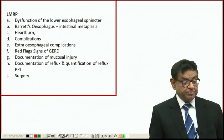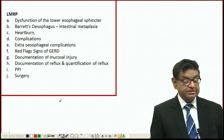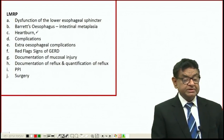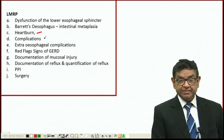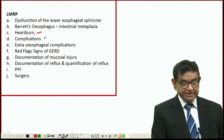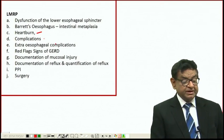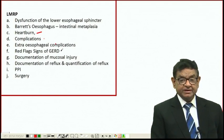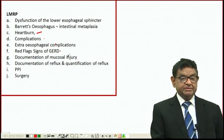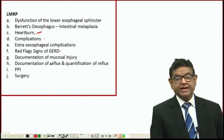Quick recap: GERD is dysfunction of the lower esophageal sphincter. Barrett's esophagus is intestinal metaplasia. Common symptoms include heartburn, which is retrosternal. Complications can be esophagitis, ulcers, iron deficiency anemia, Barrett's esophagus, and carcinoma. Extra-esophageal complications include dental erosion, laryngitis, cough, and asthma. Red flag signs include weight loss, dysphagia, and odynophagia. Demonstrate injury by endoscopy with velvety appearance. Document reflux by 24-hour pH monitoring at the lower end of the esophagus.